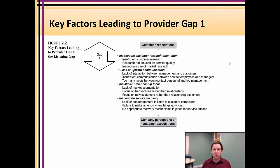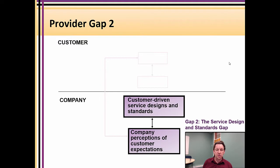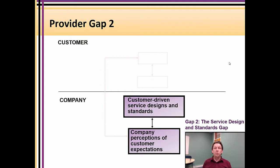That said, it's not worth artificially creating problems for the express purpose of solving them. Provider gap number two — the second company-side element — is an internal procedural component. This is where you have your perception of what you think the customer wants but you're unable to translate that into the product you design and the service process you implement.